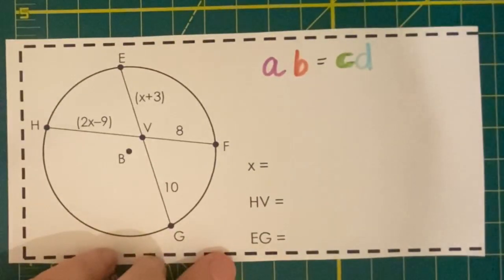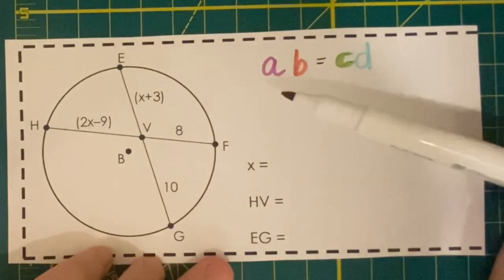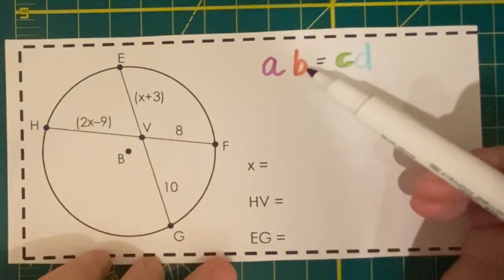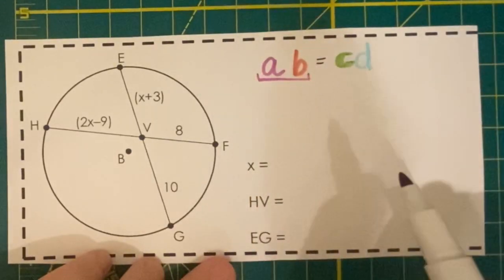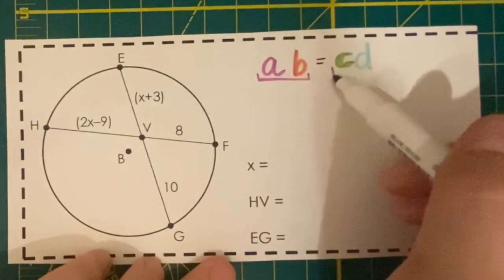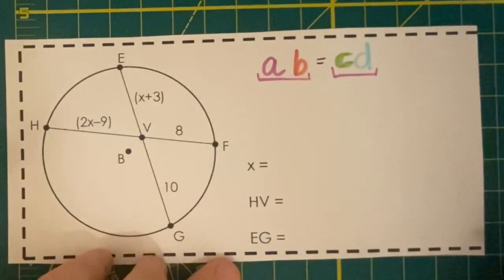Here's another example of this theorem. Now it doesn't matter where we start with our segments A and B, but these two need to be connected on the same chord, and these two, C and D, need to be connected on the same chord.